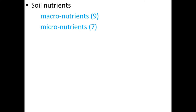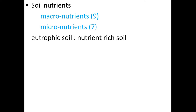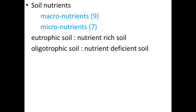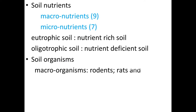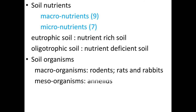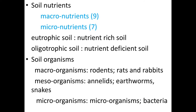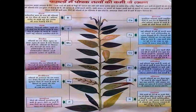Based on soil nutrients, soil is classified as eutrophic (nutrient-rich) and oligotrophic (nutrient-deficient). Soil organisms are classified as macro organisms (large, like rodents, rats, and rabbits), meso organisms (medium size, like annelids, earthworms, and snakes), and micro organisms (not visible to the naked eye, like bacteria such as rhizobium). This picture shows various nutrient deficiencies due to micro or macronutrient shortfalls in plants.